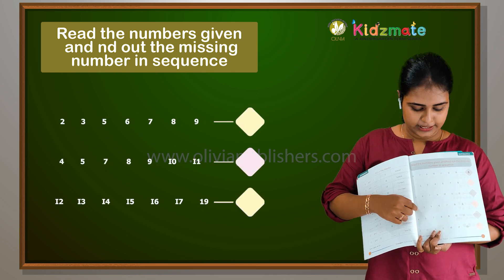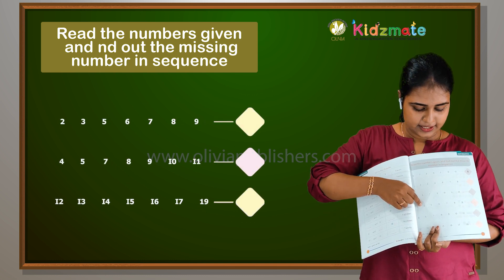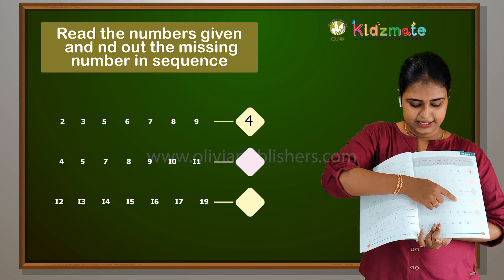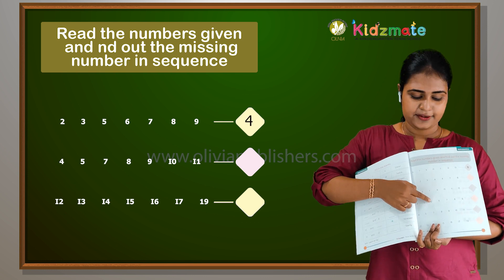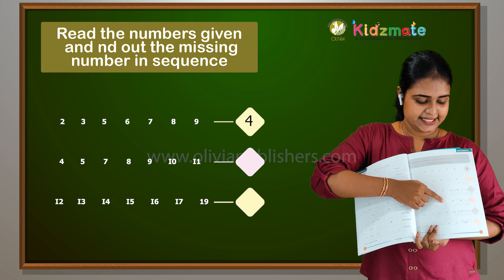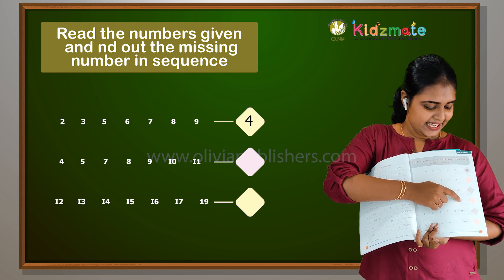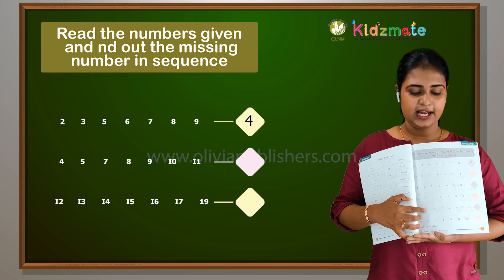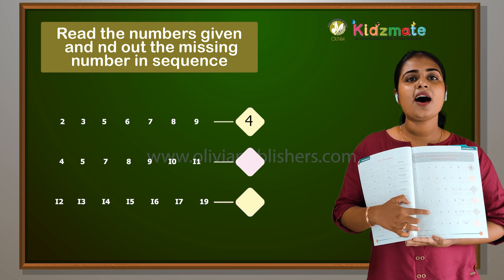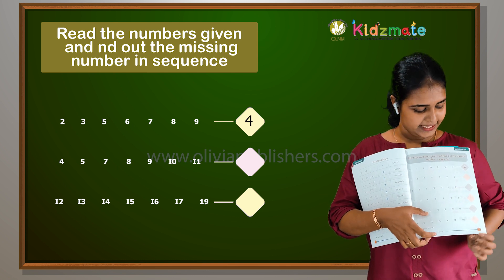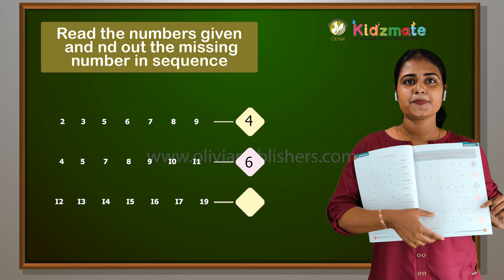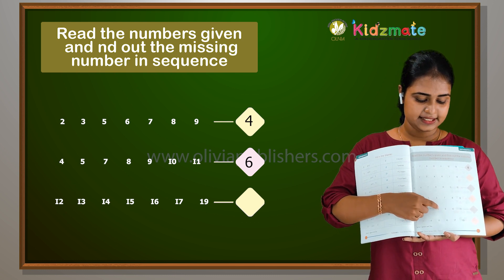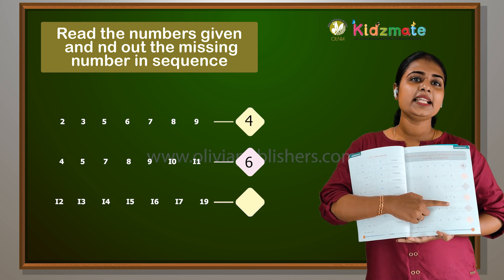Two, three, four. Seven, eight, nine. Four, five, six. Eight, seven, eight, ten, eleven.